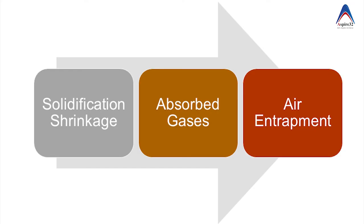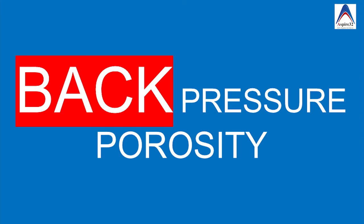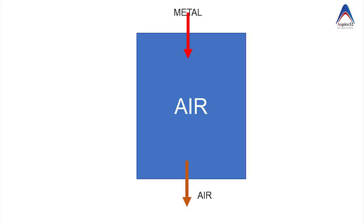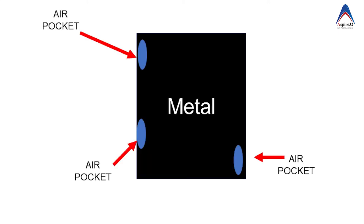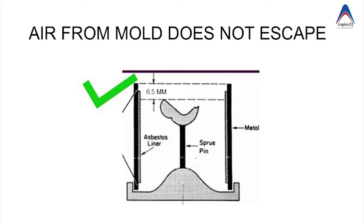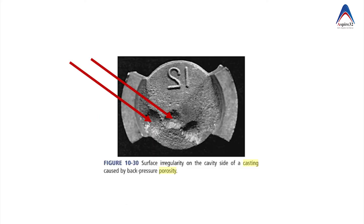The last type of porosity is because of air entrapment, generally called back pressure porosity. When metal enters from the sprue area, air in the mold should escape through the porous investment material. However, in some local areas, air pockets can prevent the metal from reaching that junction. To prevent this, the distance between the tip of the pattern and the end of the ring should not be less than 6.5 mm, ensuring no resistance to the outward movement of air from the mold.